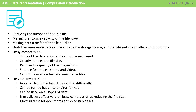There are two types of compression. Lossy compression, where some of the data is lost and cannot be recovered. This greatly reduces the file size. It reduces the quality of the image or sound and is suitable for images, sound and video, but it cannot be used on text and executable files.